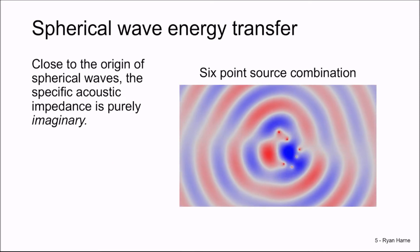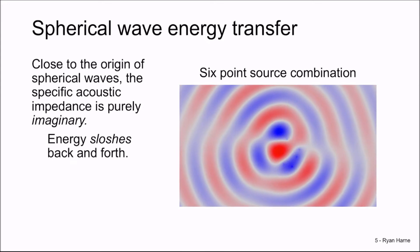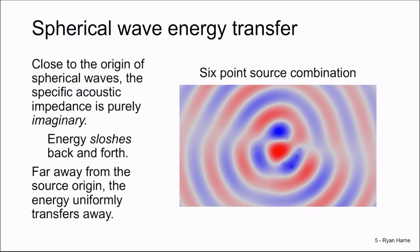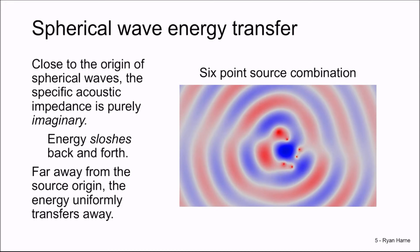Close to the origin of spherical waves, the acoustic impedance is purely imaginary. This animation shows a six-point source combination oscillating somewhat randomly. Very close to the geometric center of these sources, the energy sloshes back and forth with no clear pattern. But looking far away from the geometric center, the energy becomes organized and appears to flow uniformly, like a plane wave, towards the extremities of the schematic.